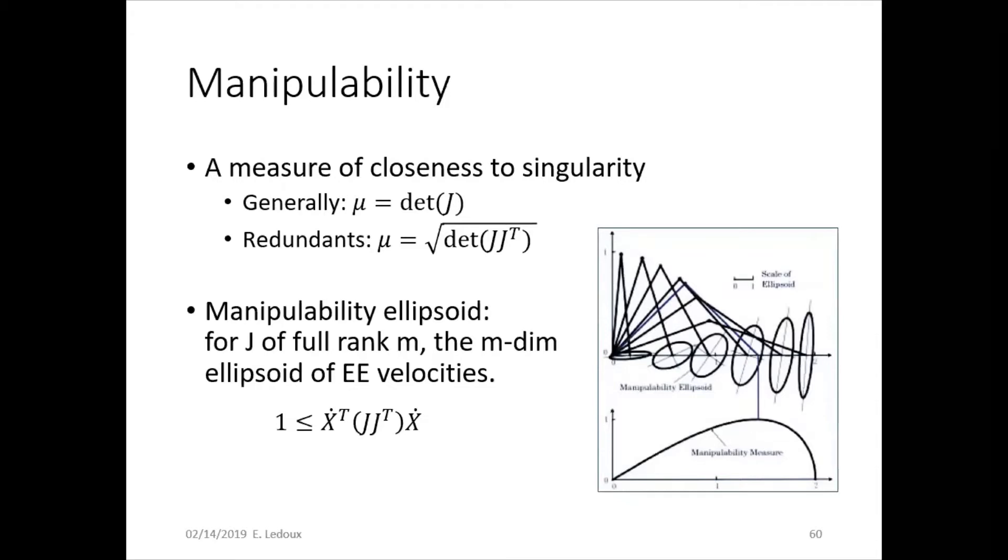Manipulability is a measure of closeness to singularity that a robot is at. So usually, mu, the manipulability, is the determinant of the Jacobian. So if mu equals zero, then that is the singularity.